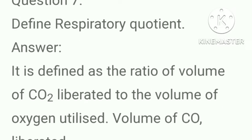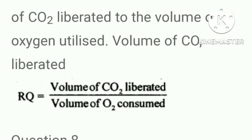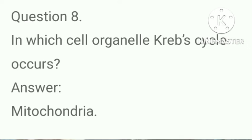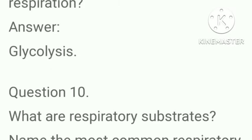Define respiratory quotient. It is defined as the quotient of volume of carbon dioxide liberated to the volume of oxygen utilized — that is, volume of CO₂ liberated divided by volume of O₂ consumed. In which cell organelle does the Krebs cycle occur? Answer: mitochondria. Name the phase which is common for both aerobic and anaerobic respiration. Answer: glycolysis.